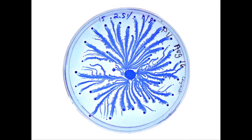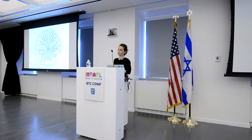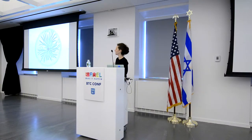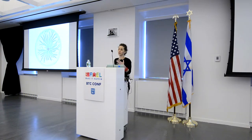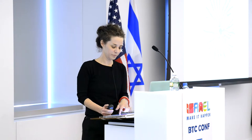In this petri plate dish, we have 10 billion bacteria — 10 times more than the entire population of Earth. Yet they communicate and coordinate their actions as a colony. So how do they actually communicate with each other?